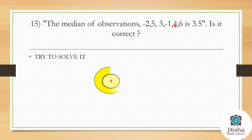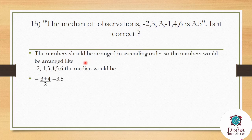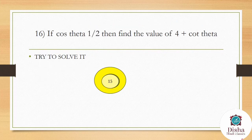The median of observations −2, 5, 3, −1, 4, 6 is said to be 3.5 — is it correct? Arranging in ascending order: −2, −1, 3, 4, 5, 6. There are 6 terms (even), so median = (3rd + 4th term)/2 = (3 + 4)/2 = 7/2 = 3.5. Yes, it is correct.